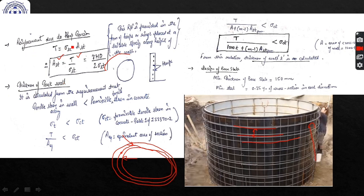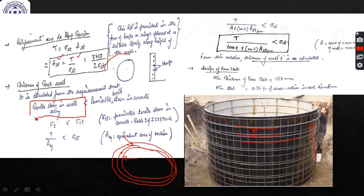The main reinforcement in circular tanks resting on ground with flexible base is the hoop reinforcement provided circumferentially along the height of the tank. Next, we calculate the thickness of the tank wall. Since there is no moment acting, we cannot use d = √(M/(R·b)). Instead, we use the principle that tensile stress in the wall should be less than the permissible tensile stress in concrete.